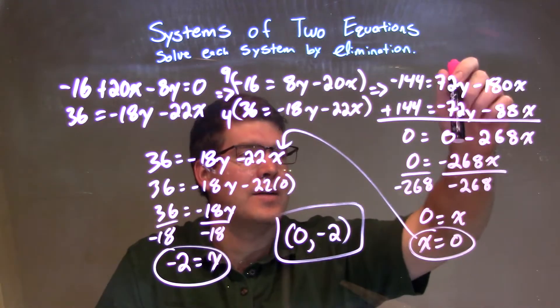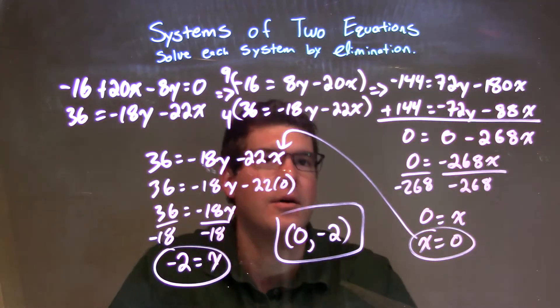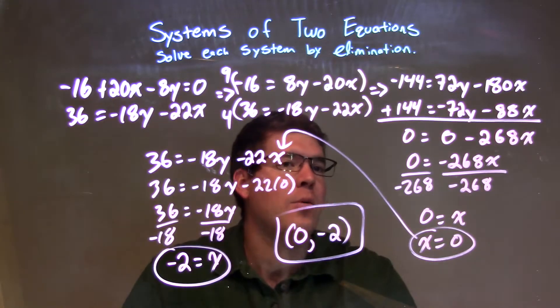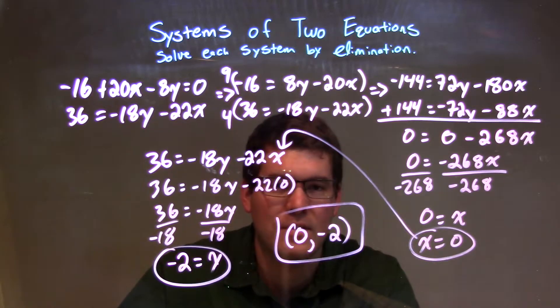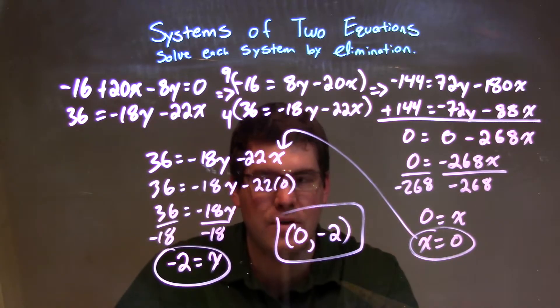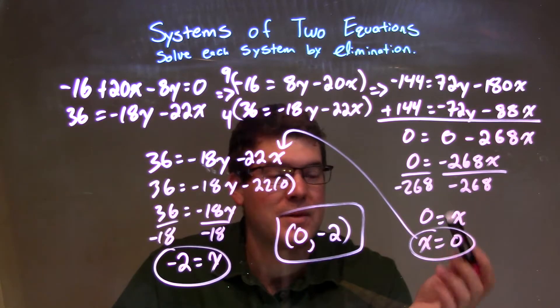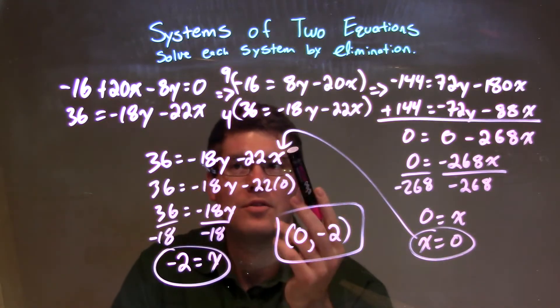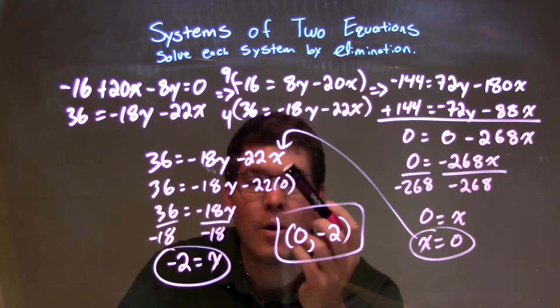When I add the two equations, y gets eliminated, but I also ended up getting 0 for the numbers by itself. So, we end up with 0 equals negative 268x divided by negative 268 to get x equals 0. That's always nice when x is 0 because things eliminate quickly. 0 goes in for x, and then we solve for y.